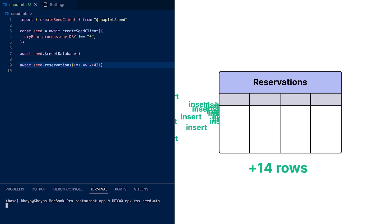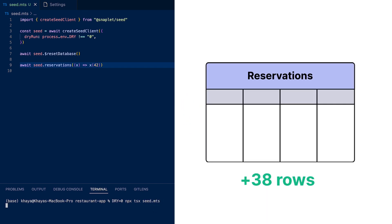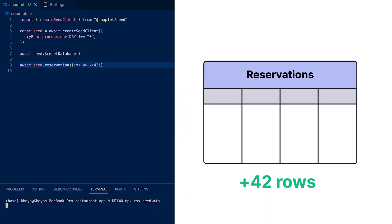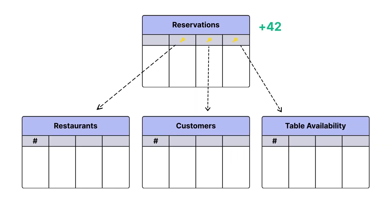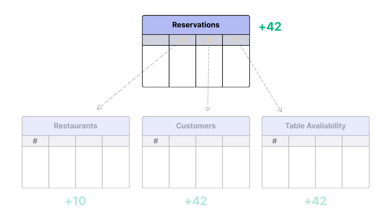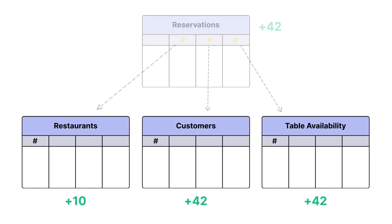Snaplet will populate your database, inserting 42 rows into the reservations table, and at the same time generate all the required data to fill in the gaps. Practically, this means you only need to specify the data that you want, and Snaplet will take care of the rest.